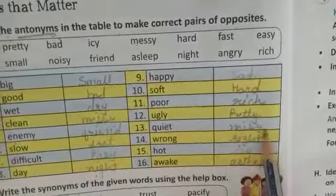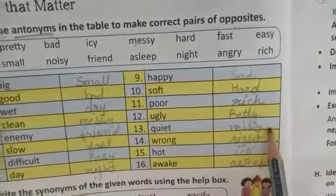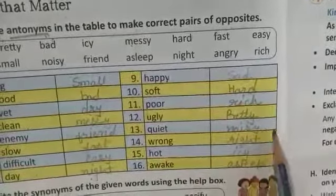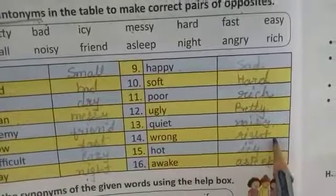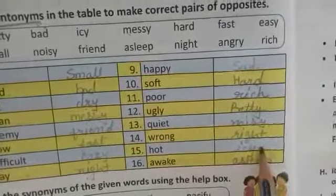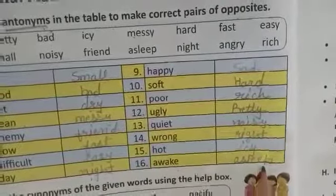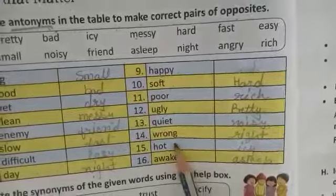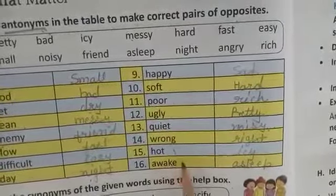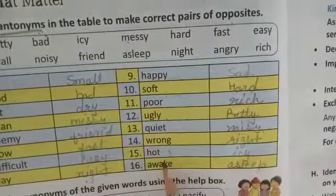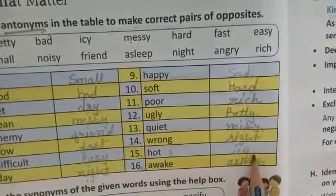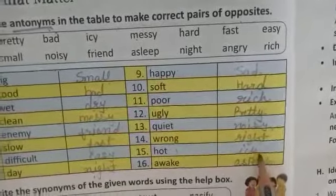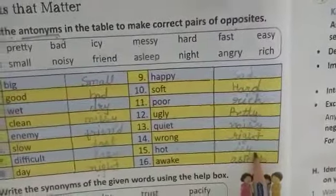Quiet, noisy — noisy means making too much noise, like students in class. Wrong, right. Hot, icy. Awake, asleep. Here is one new word to learn: most of the time we say the opposite of hot is cold, but here the new word is icy. So instead of cold you can also use the word icy.